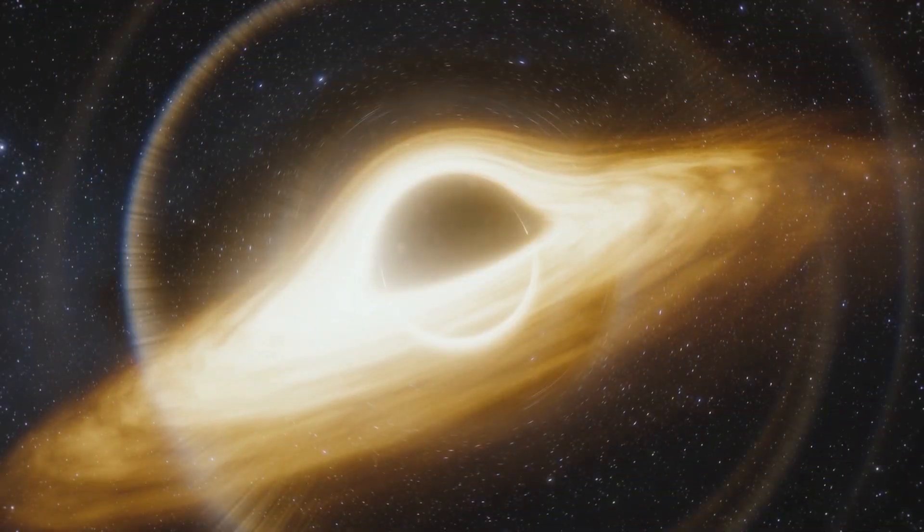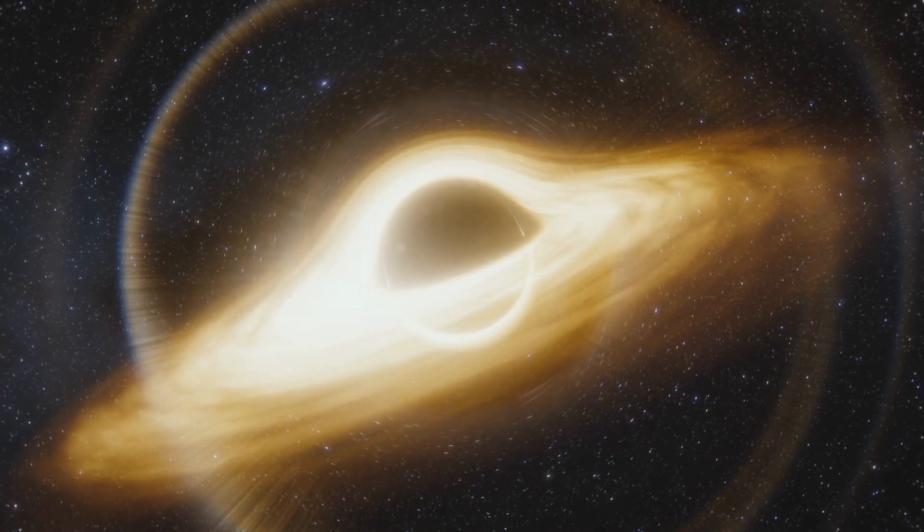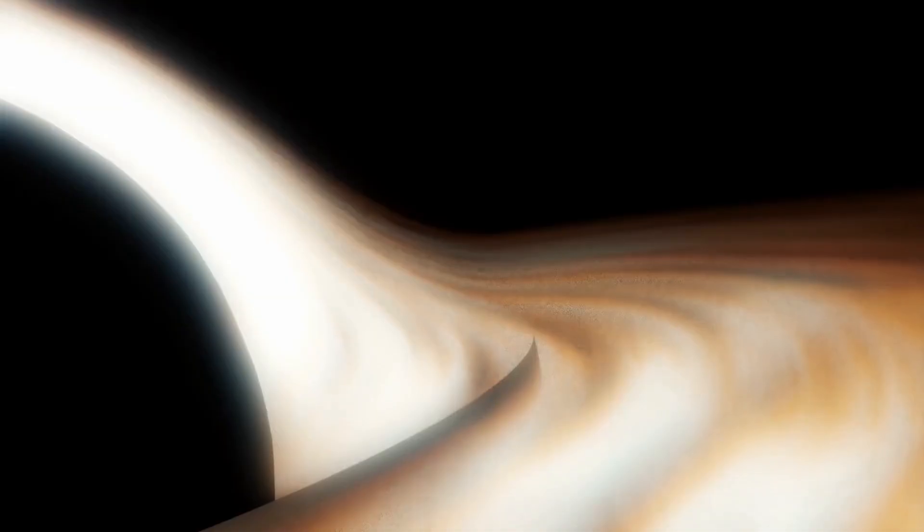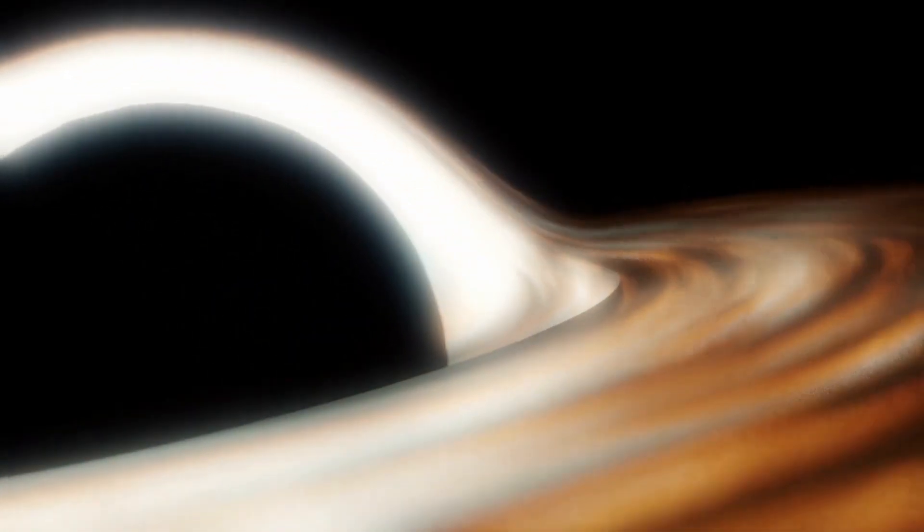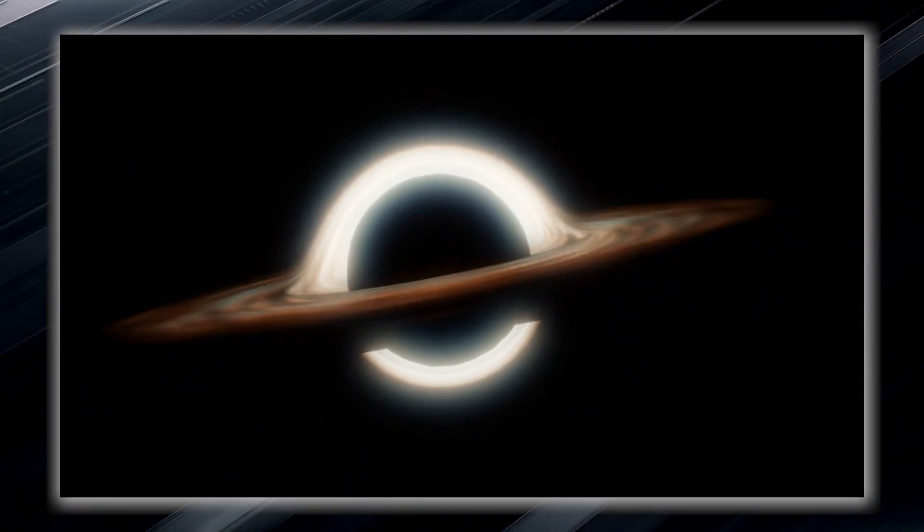This is where things become truly extraordinary. The gravitational pull near a black hole is so incredibly strong that it creates what is known as an event horizon. The event horizon is not a physical barrier, but rather a region where space gradually bends. It is an invisible boundary or point of no return.